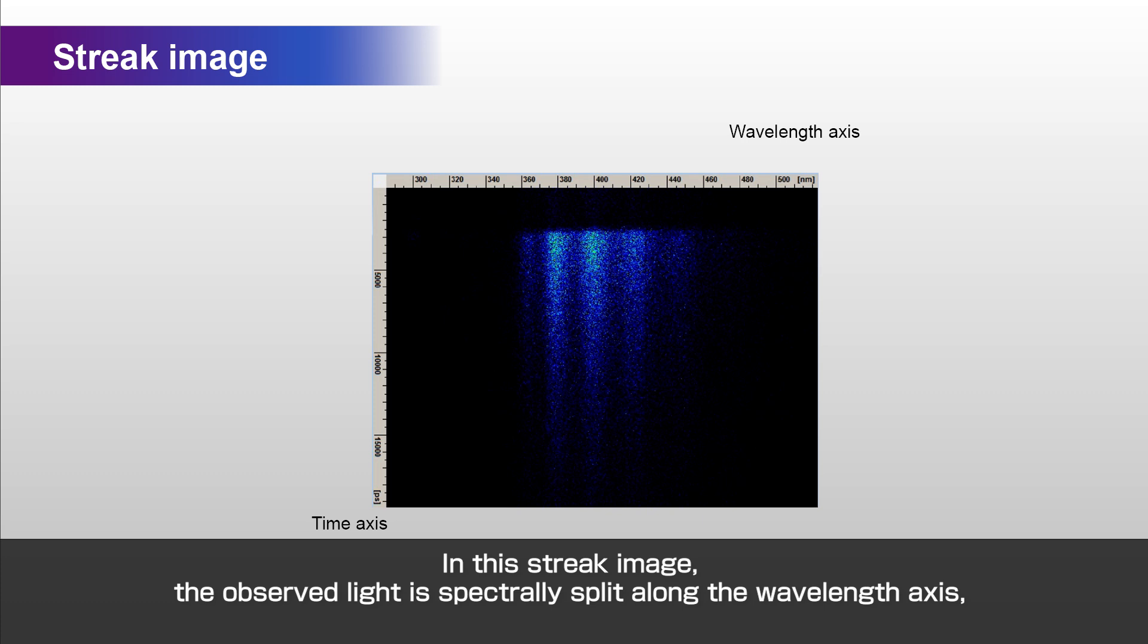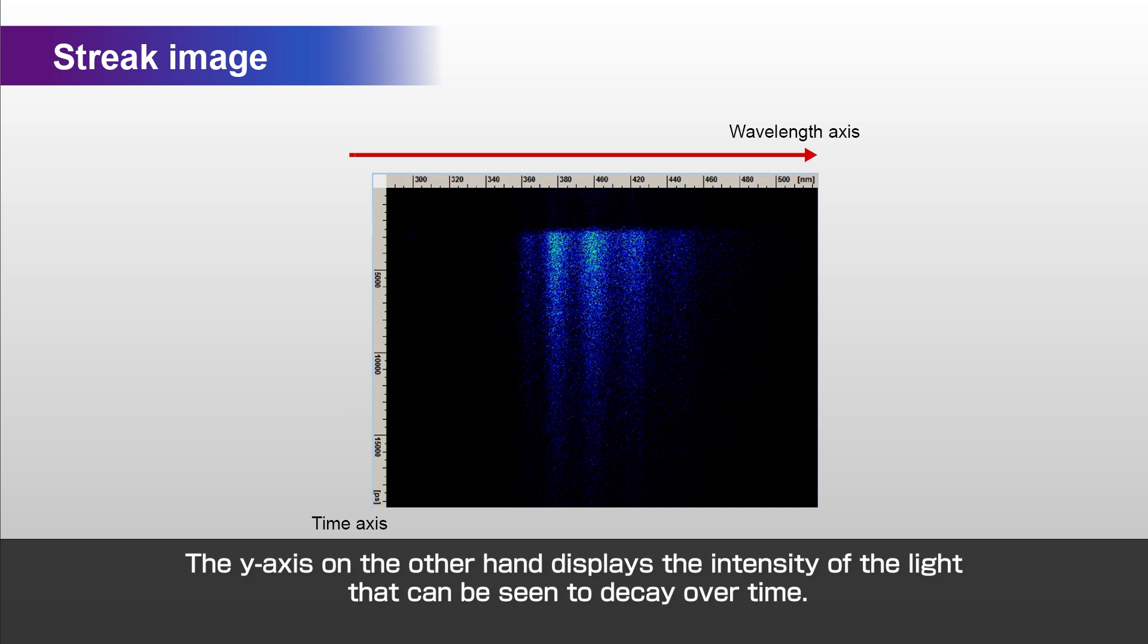In this streak image, the observed light is spectrally split along the wavelength axis. The y-axis, on the other hand, displays the intensity of the light that can be seen to decay over time.